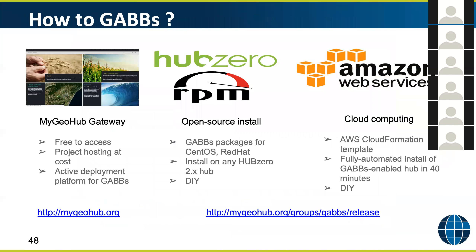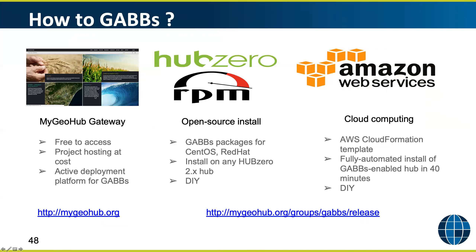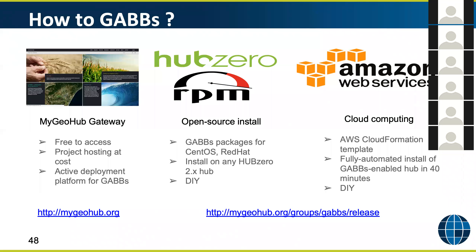How do you access GABS if you're interested? The first option is our MyGeoHub Gateway — it's free to access. We host major projects there and every new release we get from GABS we put on this gateway as a showcase, also supporting our researchers. GABS is also part of the Hub Zero release with packages available that you can install on your own machine, and there is an Amazon setup available. We actually have a video showing how to install it with one click in under 40 minutes, and then you have a GABS-enabled science gateway.